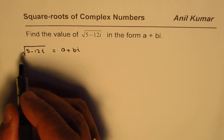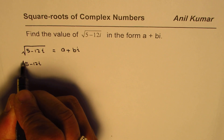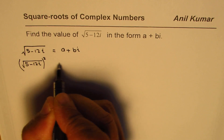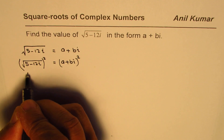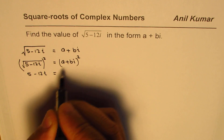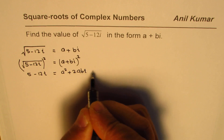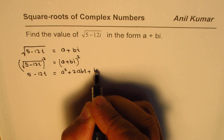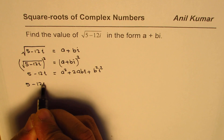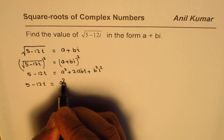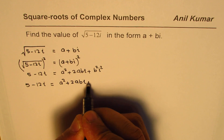Let's begin by squaring both sides. So we have 5 minus 12i, square root, whole squared equals a plus bi whole squared. We get 5 minus 12i on the left side, and on the right side we get a squared plus 2abi plus b squared i squared, which gives us a squared plus 2abi minus b squared.